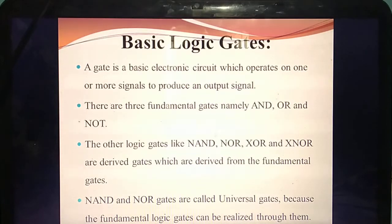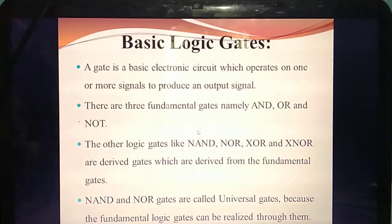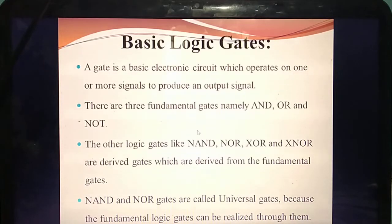Among the derived gates, NAND and NOR are called universal gates. Totally four gates are called derived gates. Why? Because these gates are derived from the fundamental gates — AND, OR, and NOT. And from among those four derived gates, NAND and NOR are called universal gates, because they work like fundamental gates.